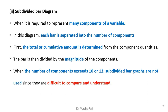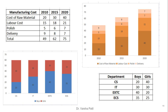A subdivided bar diagram is used when it is required to present many components of a variable. Each bar is separated into a number of components; first the total or cumulative amount is determined from the component quantities, then the bar is divided by the magnitude of each component. When the number of components exceeds 10 or 12, subdivided bar diagrams are not used as they become very difficult to compare and understand.